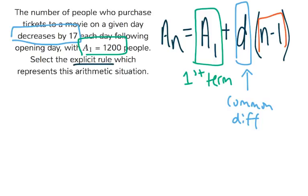And then this n minus 1 just takes whichever term number we're looking for and subtracts 1. So we write out our rule here.